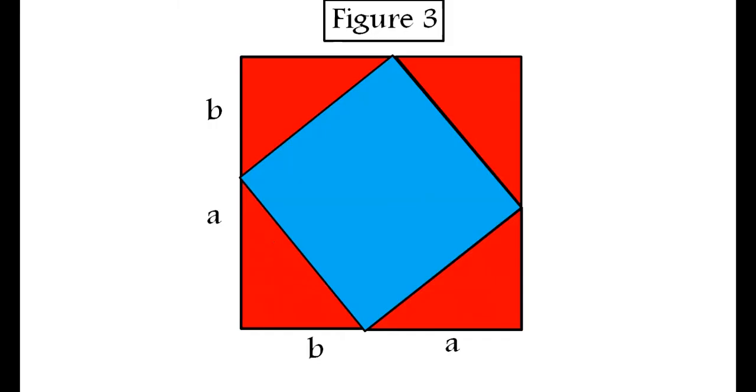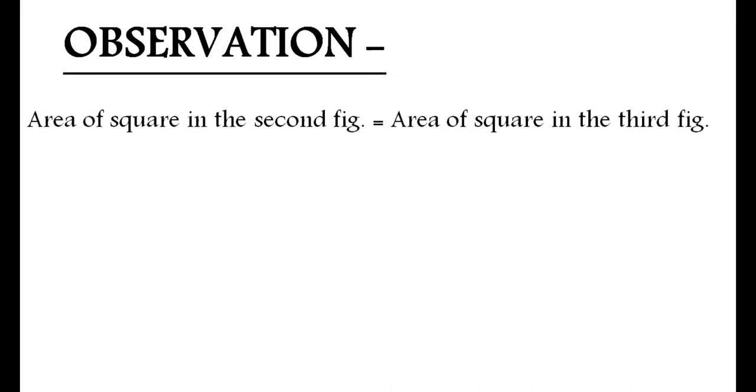From this activity, we observe that area of square in the second figure is equal to area of square in the third figure. Area of 4 red triangles plus area of yellow square plus area of green square is equal to area of 4 red triangles plus area of blue square.